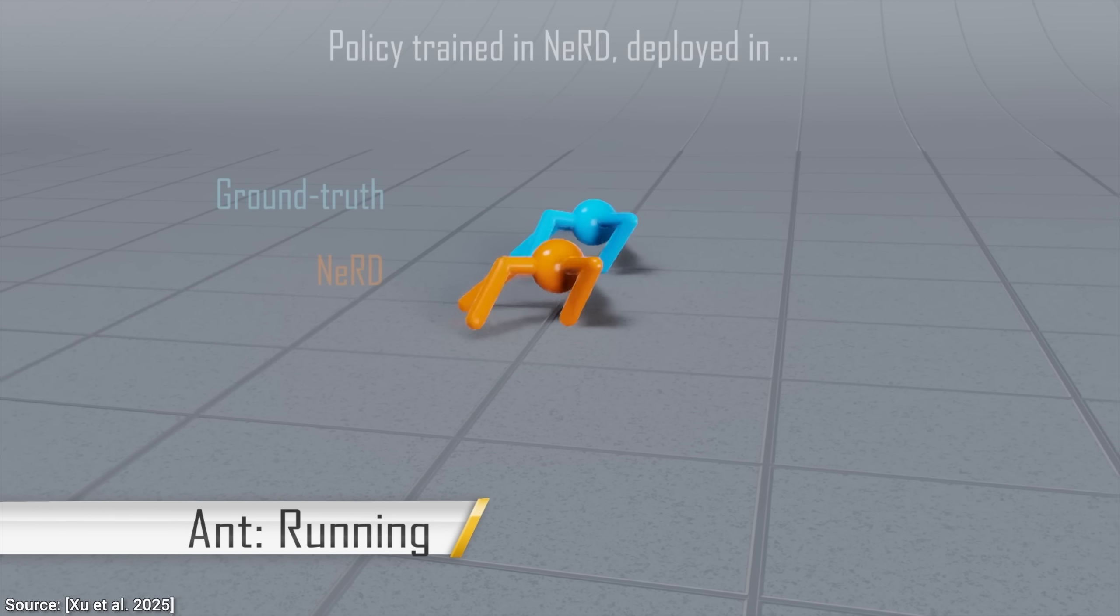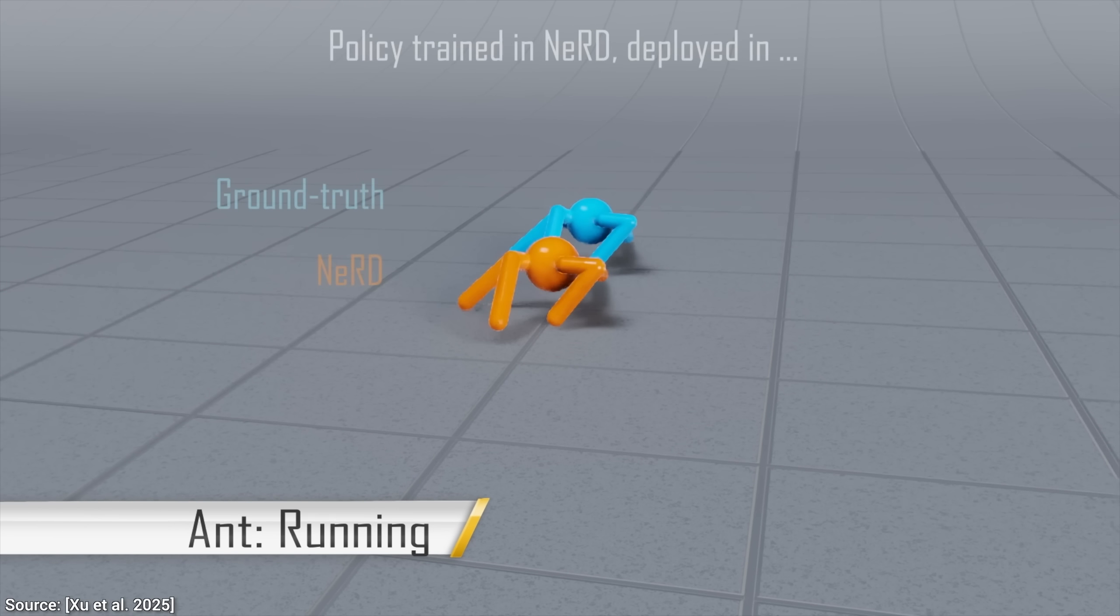Sort of. Let's try a spider. Let me try to explain this, because this absolutely blew my mind. The blue spider is running in the traditional accurate physics simulator. And the orange one. Now, hold on to your papers, fellow scholars, because that is where the insanity begins. This robot learned to walk inside the AI's imagination.